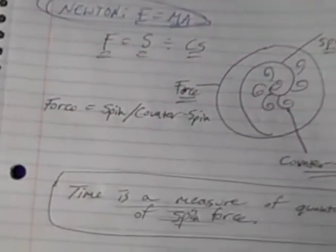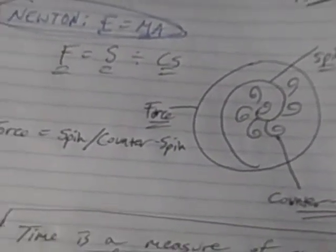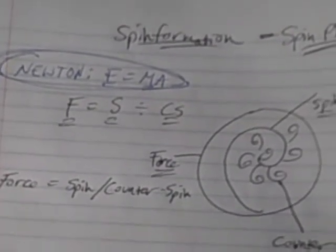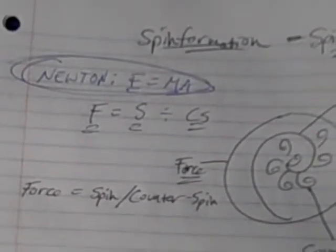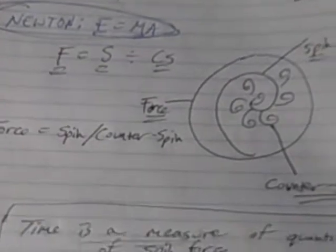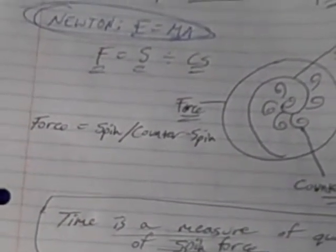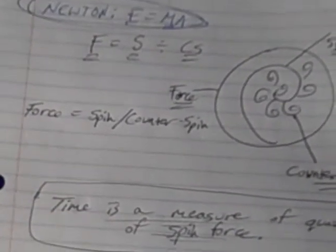I had done a previous video and formulated an equation that was a first step of a more accurate physics equation — a physics starting point more accurate than Newton or Einstein. I had been looking up the principle of torque and force, and then I saw Newton's equation force equals mass times acceleration. Given all the stuff I've been looking at with spin, I thought that can't be correct. So I formulated what I think is the correct thing. This equation is F equals S divided by CS, which is force equals spin divided by counter spin.